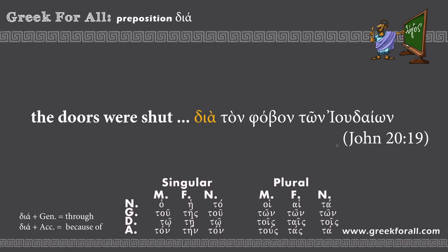Our final example comes from the Gospel of John, chapter 20: 'The doors were shut dia ton phobon ton Ioudaion.' Our preposition dia is followed by 'ton phobon' — accusative singular endings — so dia means 'because of,' giving us 'because of the fear.' Then 'ton Ioudaion' is in the genitive case, so we insert 'of': 'because of the fear of the Jews.' Together: 'The doors were shut because of the fear of the Jews.'